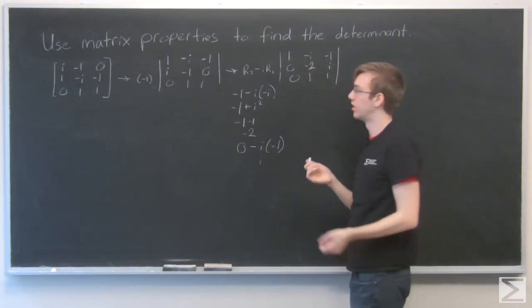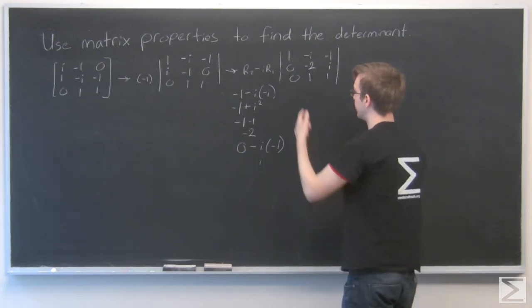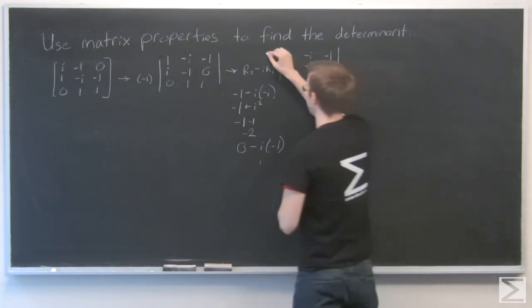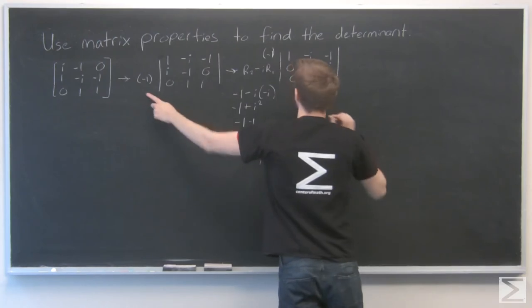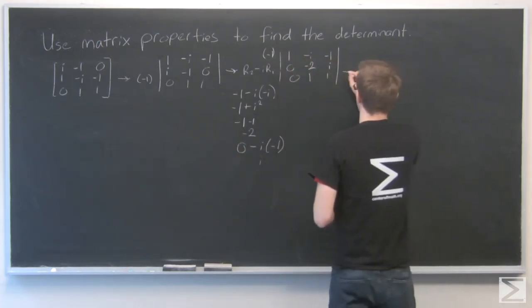Because I just subtracted a row, I don't need to multiply anything by this. But I need to keep that minus one that I got from switching rows.